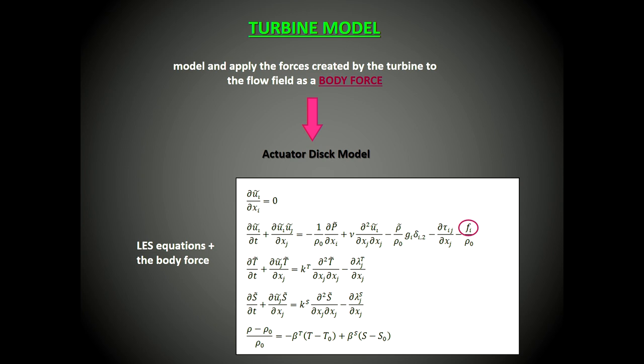The turbine model works in this way: the presence of the turbine gives rise to normal and tangential forces that act in opposition to the flow. These forces are calculated through the actuator disk model and then applied to the flow field as a body force. These are the Navier-Stokes equations plus the body force.